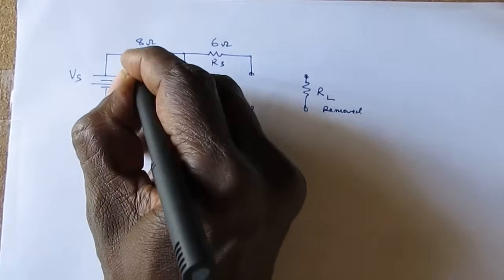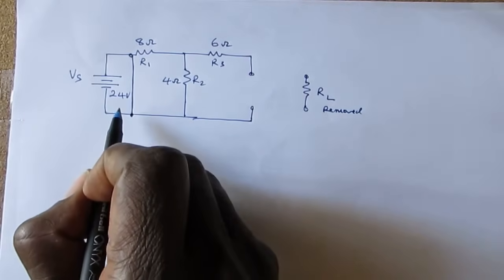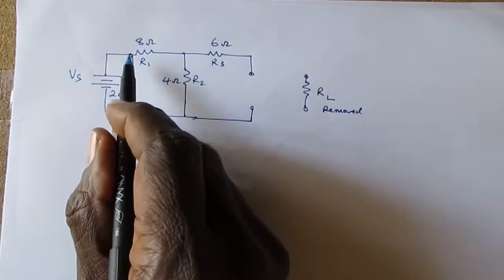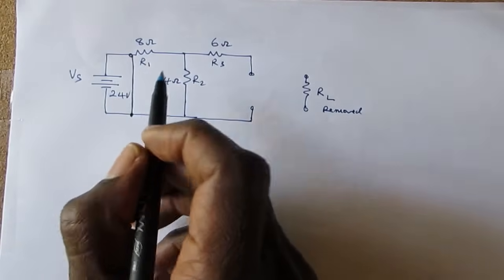Of course, in a real practical circuit, you would not physically short a voltage supply because it would actually destroy it. But for circuit analysis purposes, we short the point across where the supply is.